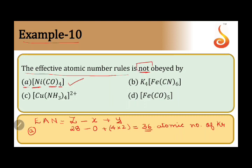Here we have to find which does not obey EAN rule. In a similar fashion, if we are taking compound B, K4[Fe(CN)6], Fe has atomic number 26. It is showing oxidation number of plus 2, meaning 2 electrons are lost. 6 cyanide ligands are donating electron pairs.